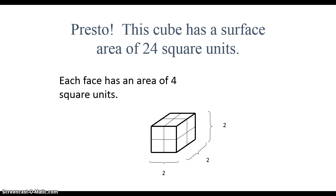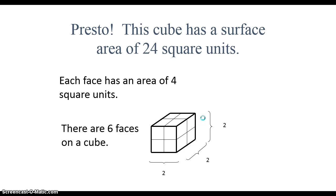The dimensions are 2 by 2 by 2. My length is 2, my width is 2, and my height is 2. So there are six faces on a cube, or a rectangular prism as we'll see later on. And since there are four square units on each of the six faces, six times four is 24 square units total for the surface area.